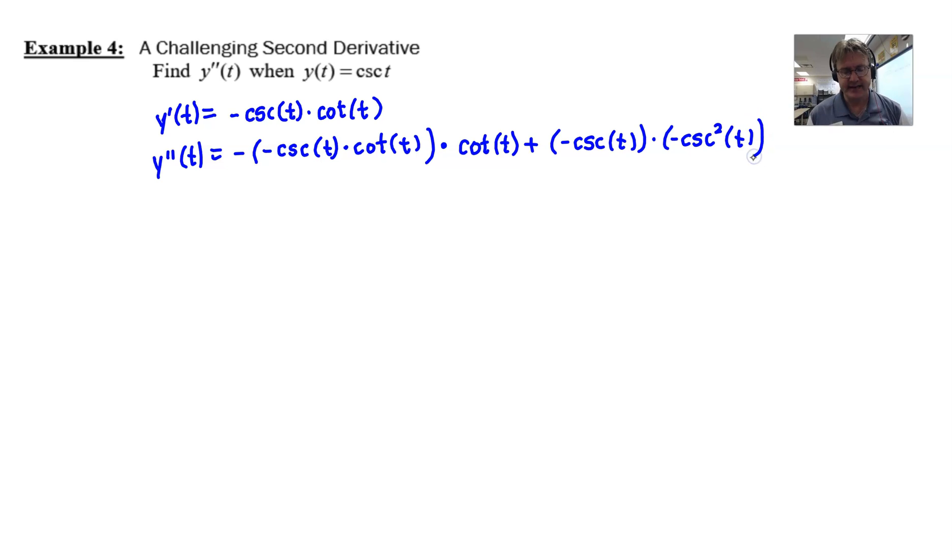Now that that's all taken care of, you essentially have your derivative. You might want to clean it up. Let's say this is a multiple choice question. It certainly would be cleaned up a bit. And really all that's going to happen is you see a double negative here. There are two instances of cotangent that can be multiplied together. So you could write this as cosecant of T times the cotangent squared of T. That makes it look a little bit better.